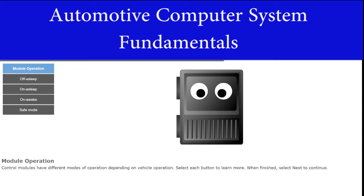A vehicle's control module system can have different modes of operation depending on the overall operation of the vehicle. We will discuss the different modes of operation and the conditions needed for the control module to operate in these modes. Select each button to learn more. When finished, select Next to continue.